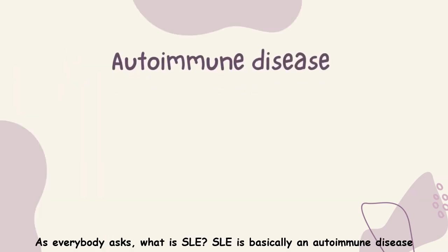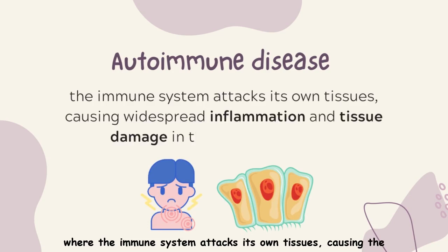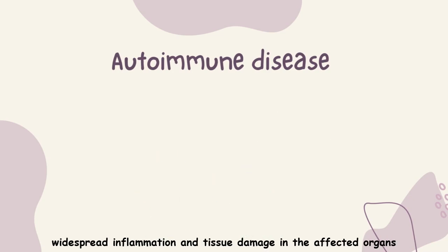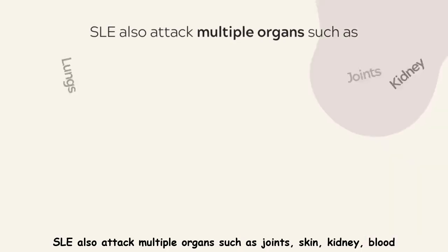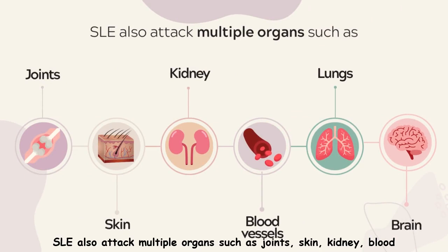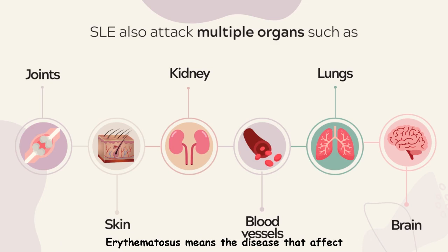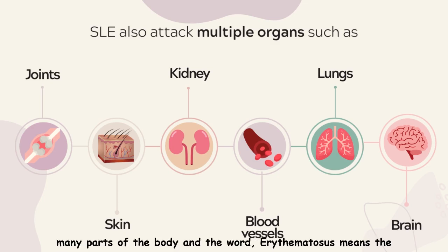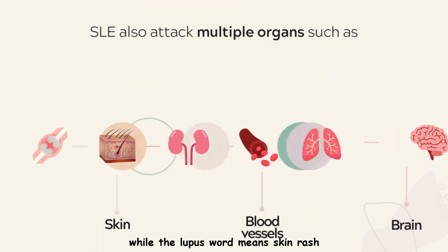As everybody asks, what is SLE? SLE is basically an autoimmune disease where the immune system attacks its own tissues, causing widespread inflammation and tissue damage in the affected organs. SLE also attacks multiple organs such as joints, skin, kidneys, blood vessels, lungs, and brain. The word systemic means the disease can affect many parts of the body, the word erythematosus means the reddening of skin, while lupus means skin rash.